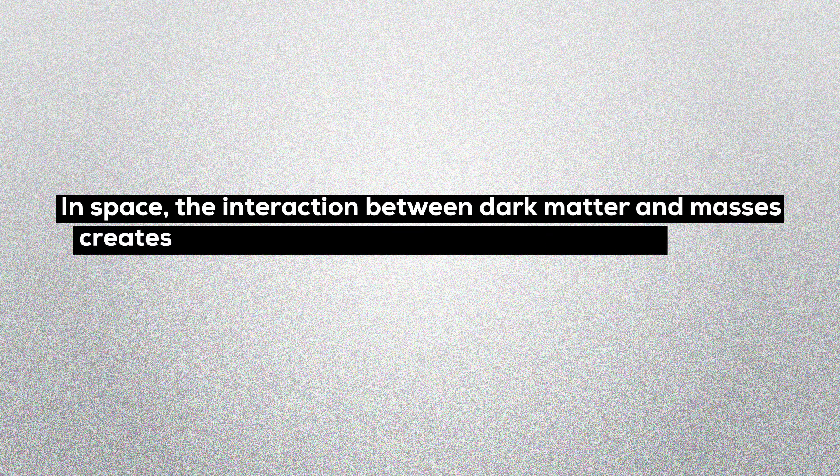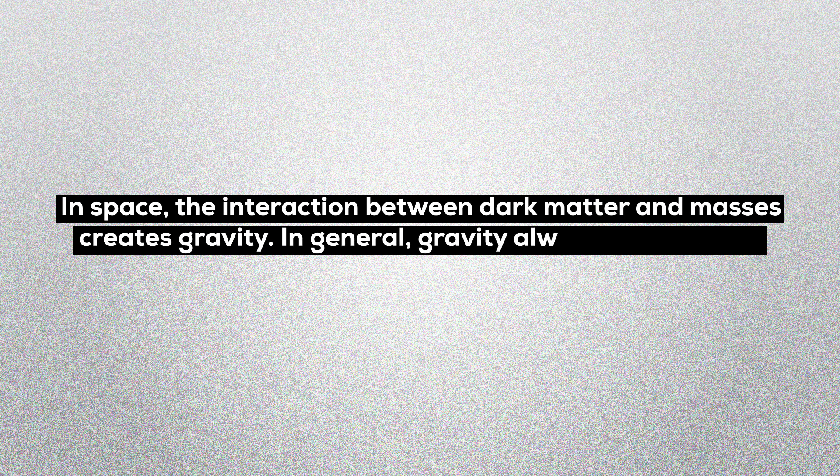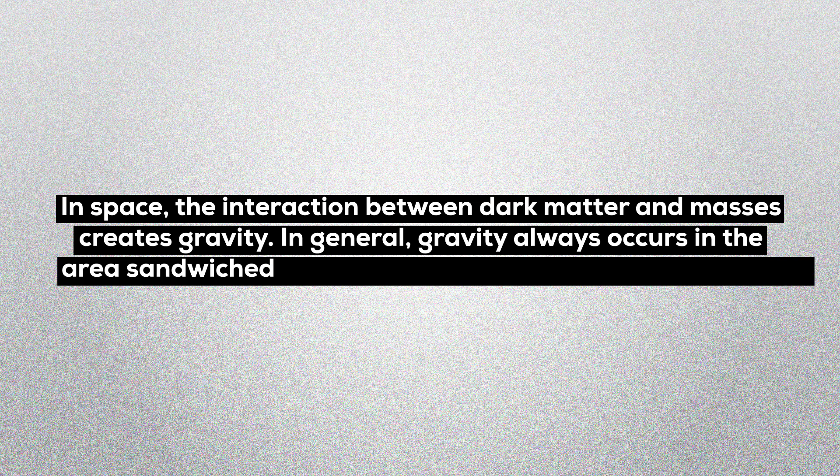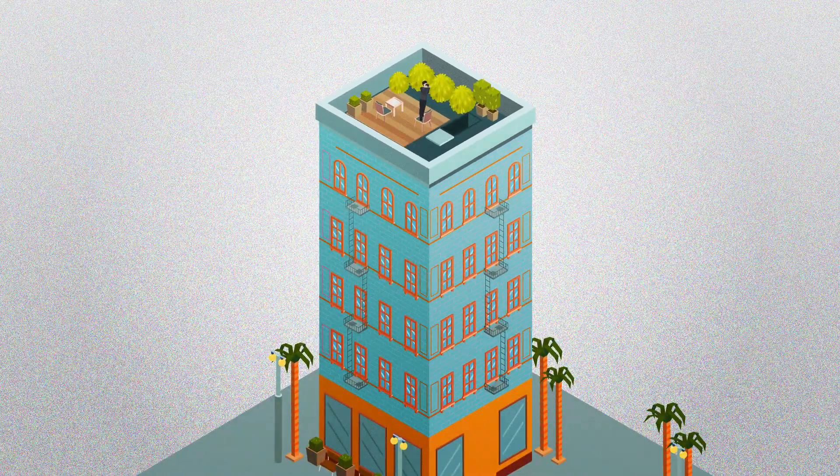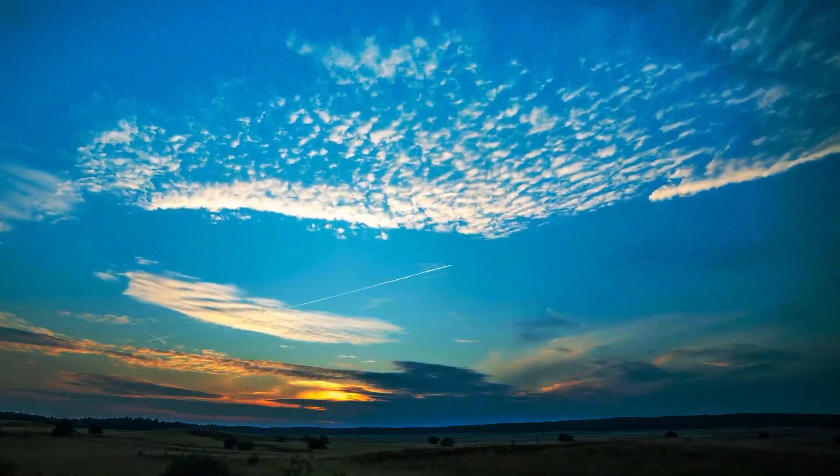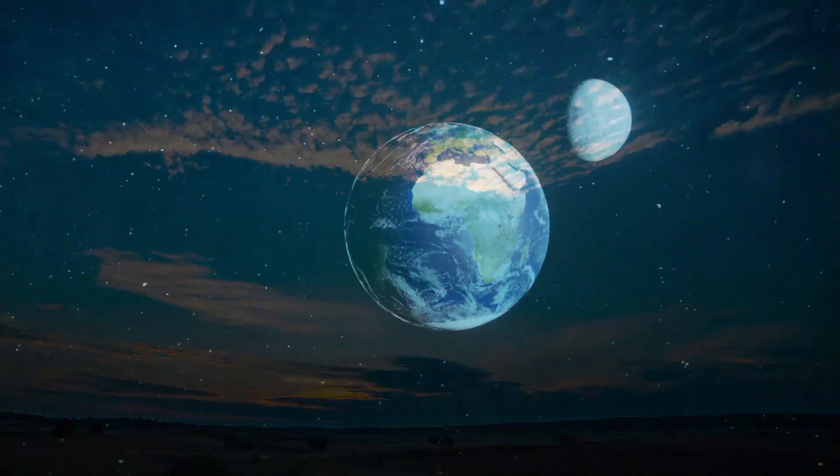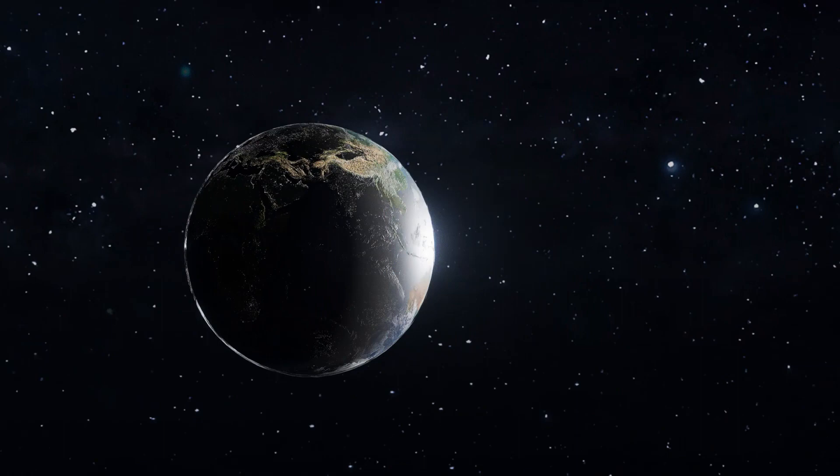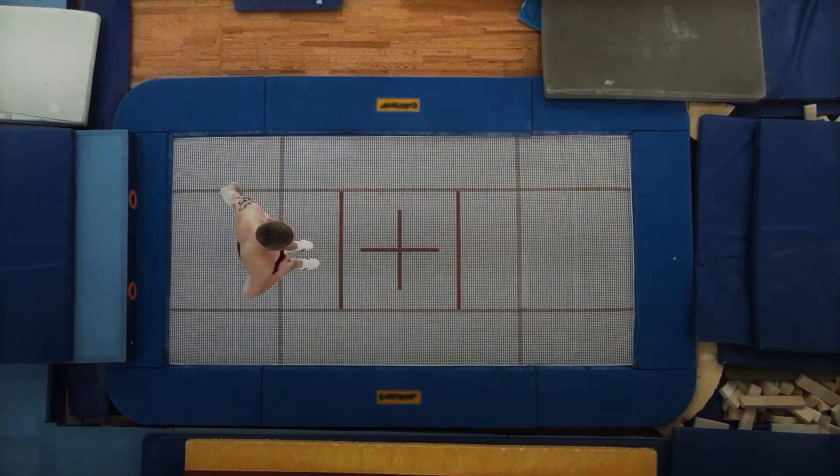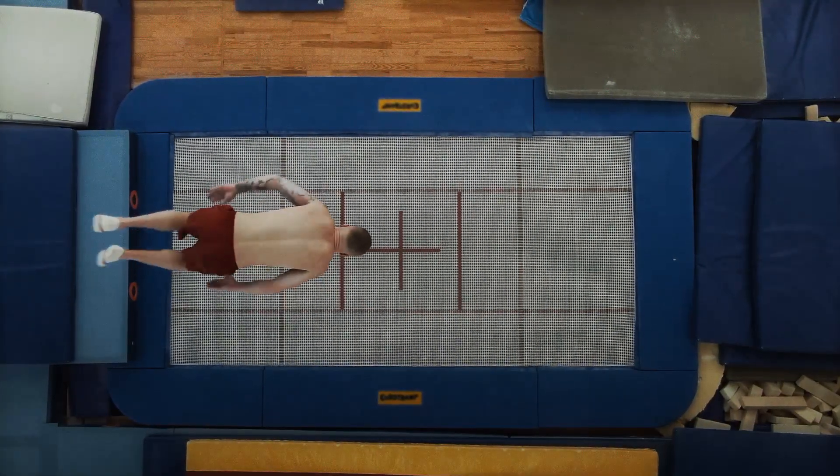In space, the interaction between dark matter and masses creates gravity. In general, gravity always occurs in the area sandwiched between masses pressing on each other. To find evidence of gravity, one no longer must look to the sky, searching for the curvature of space-time. Whether it be stars, planets and dark matter, or human bodies and trampoline fabric, masses large and small create gravity every time, everywhere.